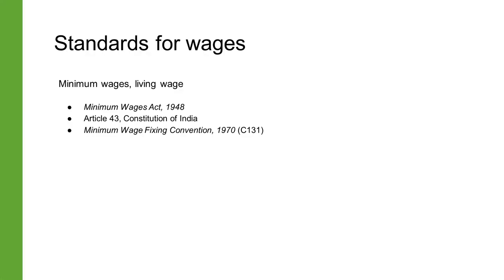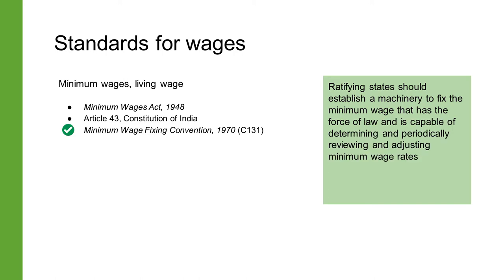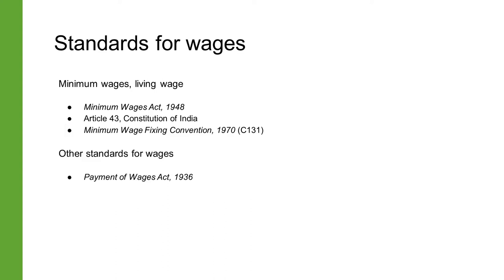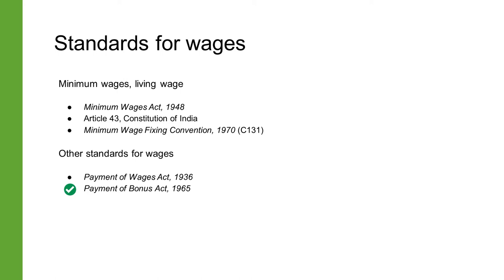This is the first violation of human rights in the garment value chain: workers paid according to minimum wages are given much less than what is really required for a reasonable living in the modern world. The Minimum Wage Fixing Convention of 1970, which is ILO Convention 131, requires ratifying states to establish a machinery to fix the minimum wage that has the force of law and is capable of determining and periodically reviewing and adjusting minimum wage rates. India has not ratified this convention.